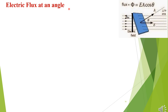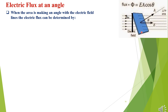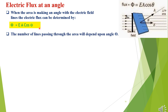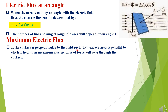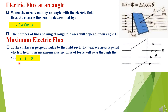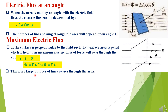Electric flux at an angle: the vector area is normal to the surface of the plane. When the surface makes an angle with the electric field lines, flux is Φ = E A cosθ. If the surface is perpendicular to the field — meaning the vector area is parallel to the electric field — the angle θ = 0°, so Φ = E A cos 0° = E A. This gives maximum electric flux because the maximum number of field lines passes through the surface.